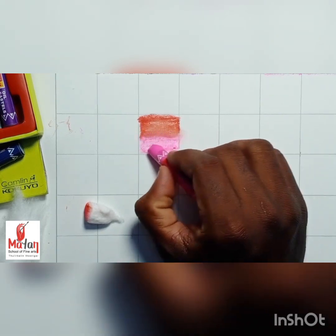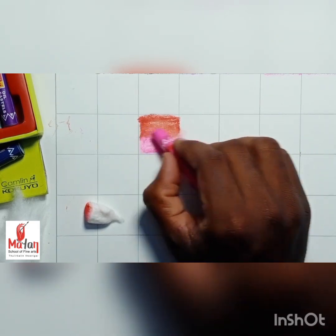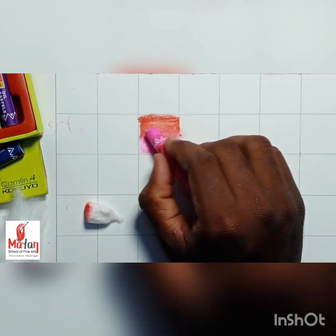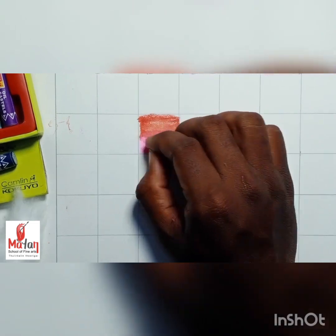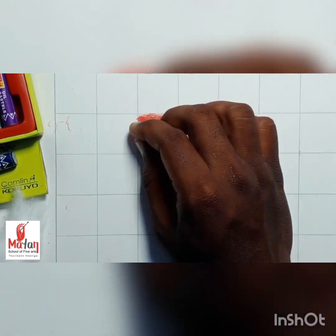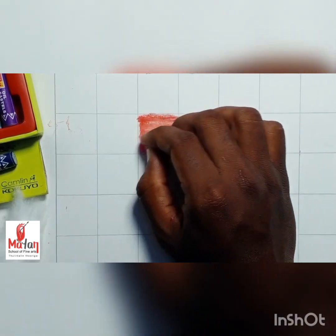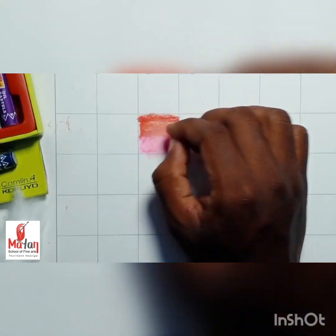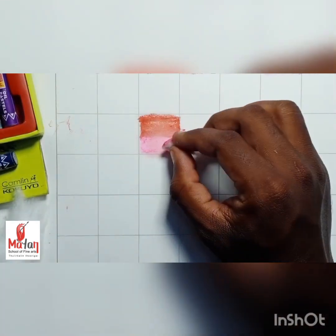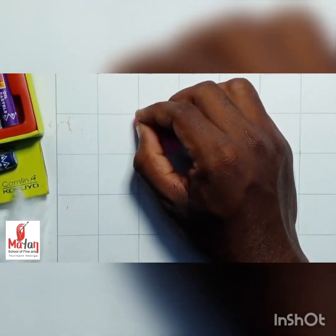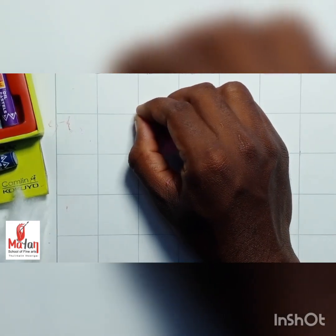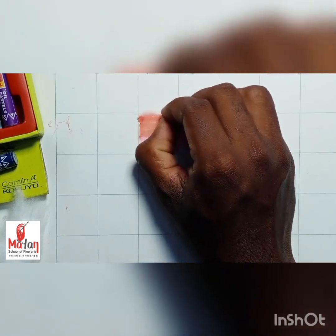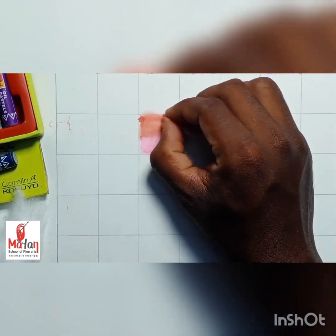Then I take the cotton. I blend the color again. I try to blend the corners of the cell, because the corners give the complete finishing of the color blending. It will give the perfect one.